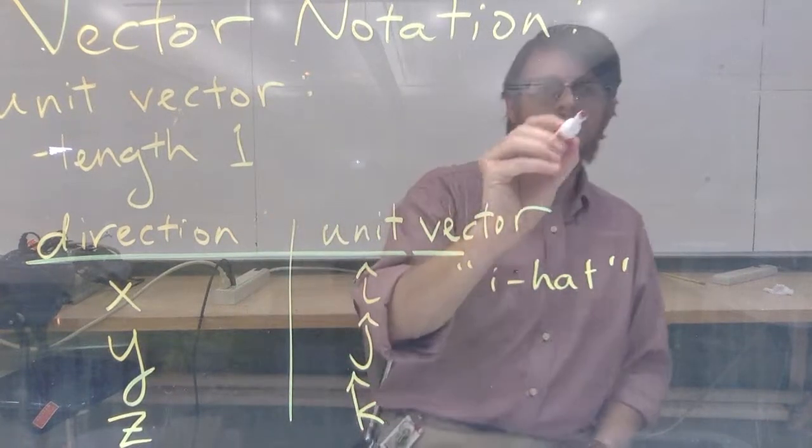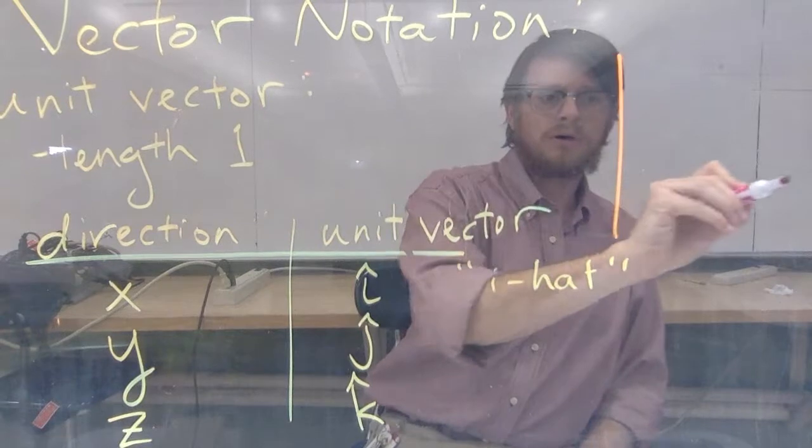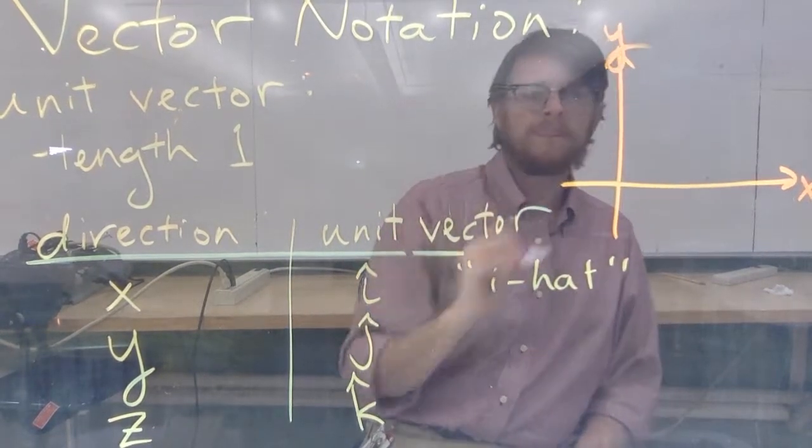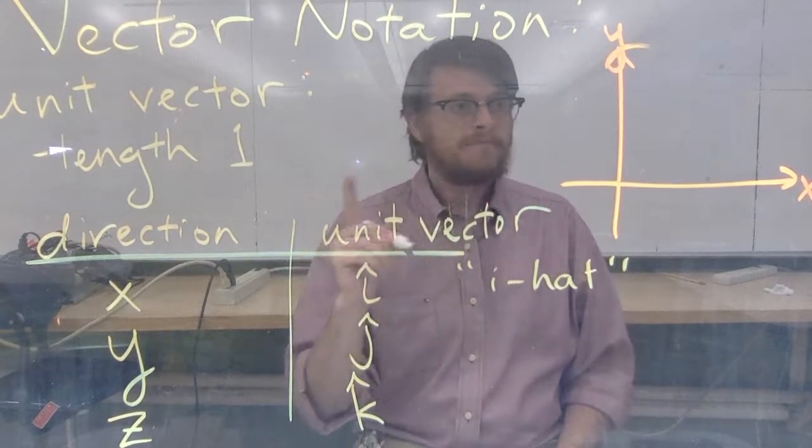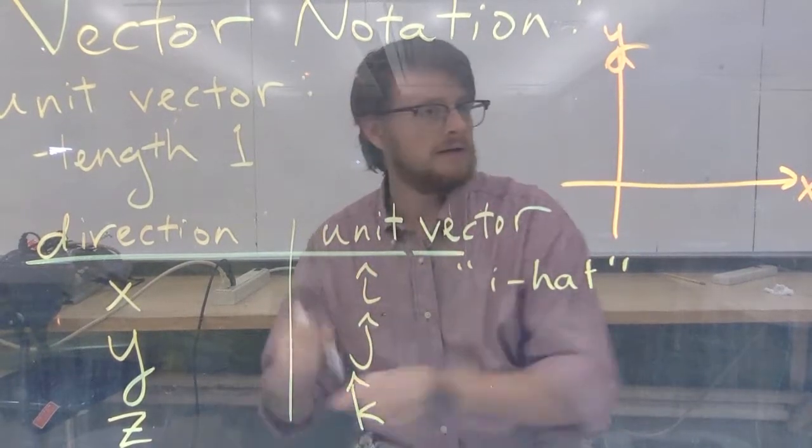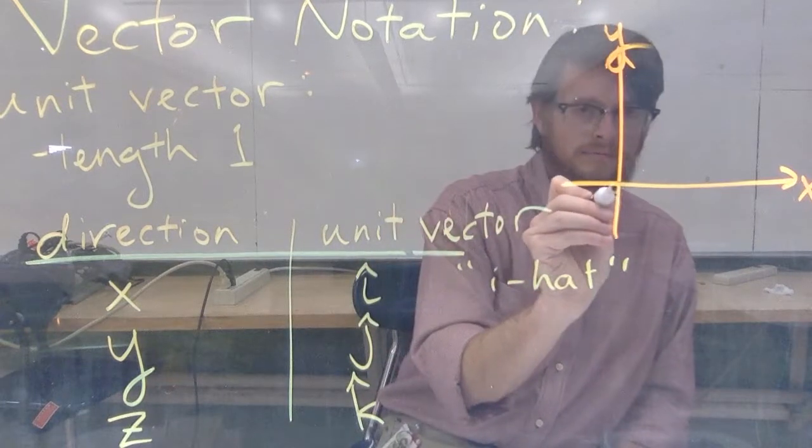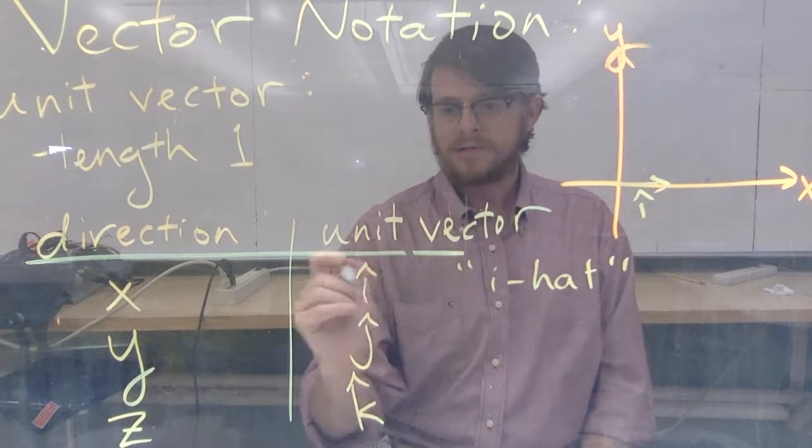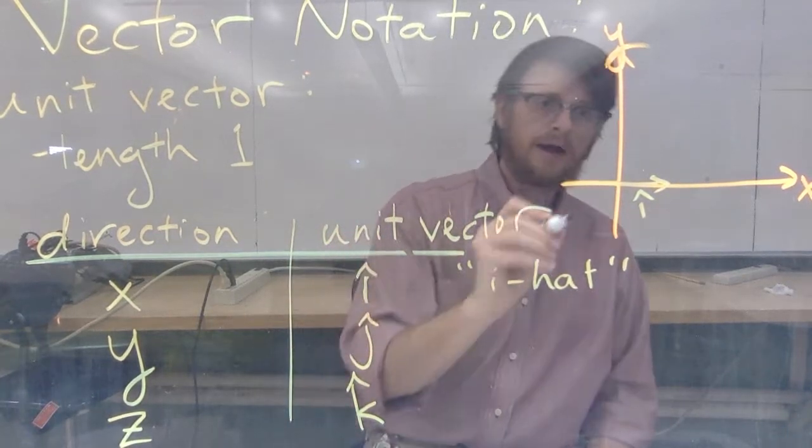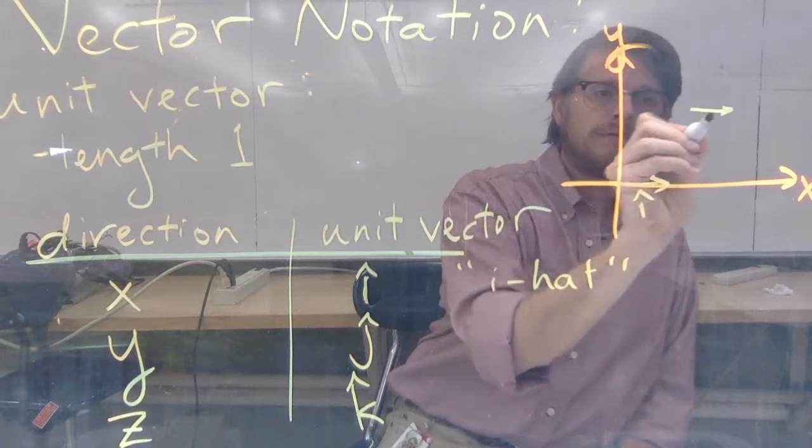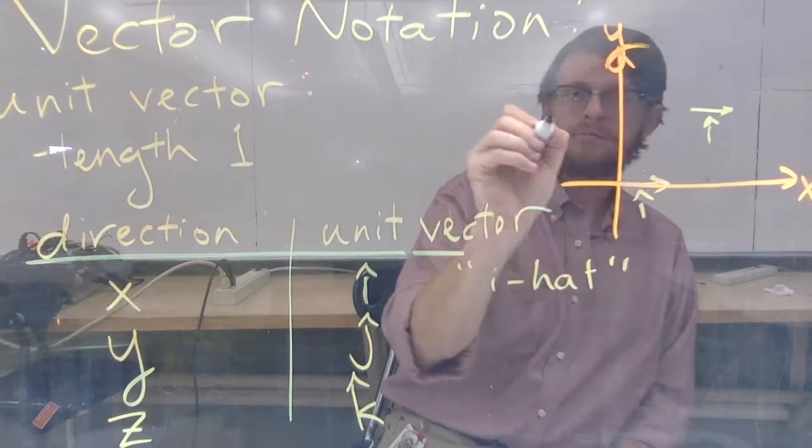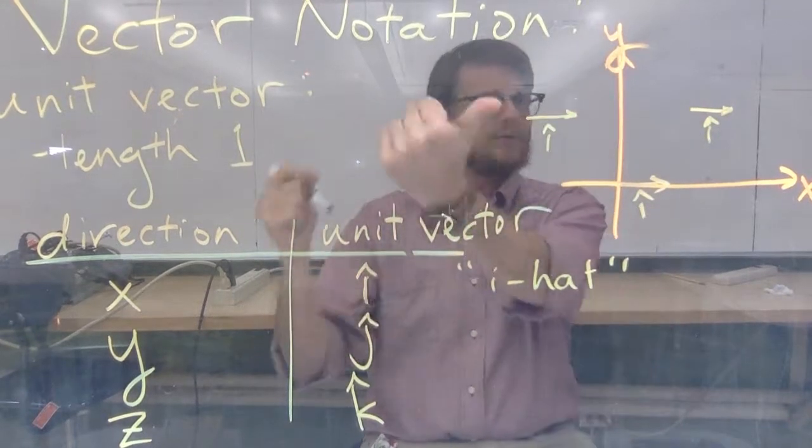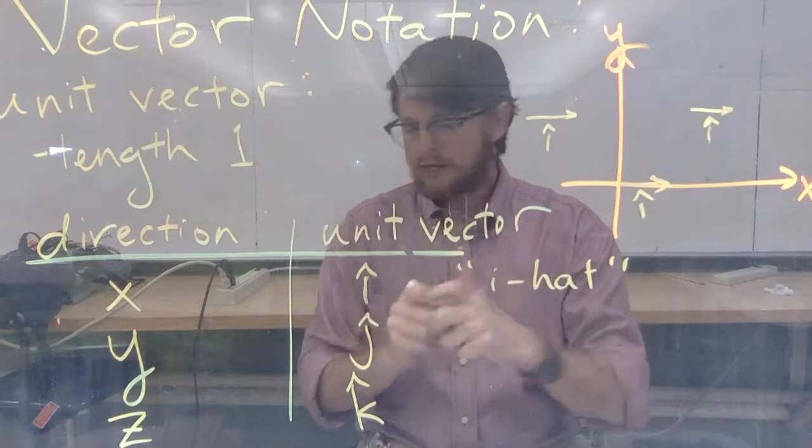Well, if we draw a coordinate system like this, this is x and this is y, then the vector i-hat is of length one. And sometimes I write my i's a little tail, but, you know, this is just the lowercase letter i. But I also want to point out this is also i-hat, right? And this is i-hat. You can slide i-hat around as long as it points in the x-direction and has length one, that's i-hat.